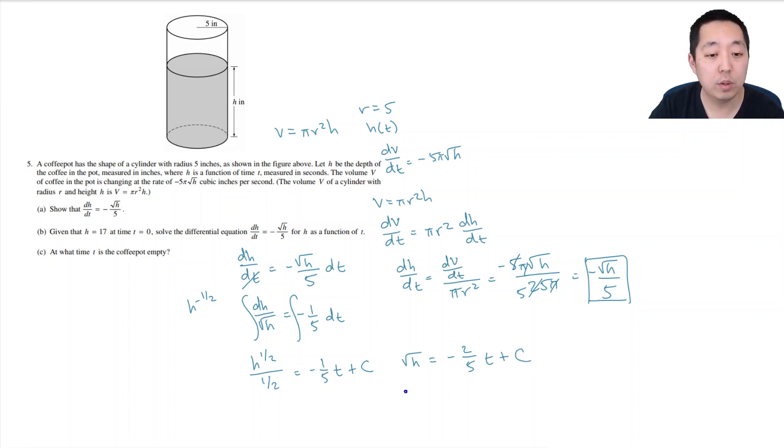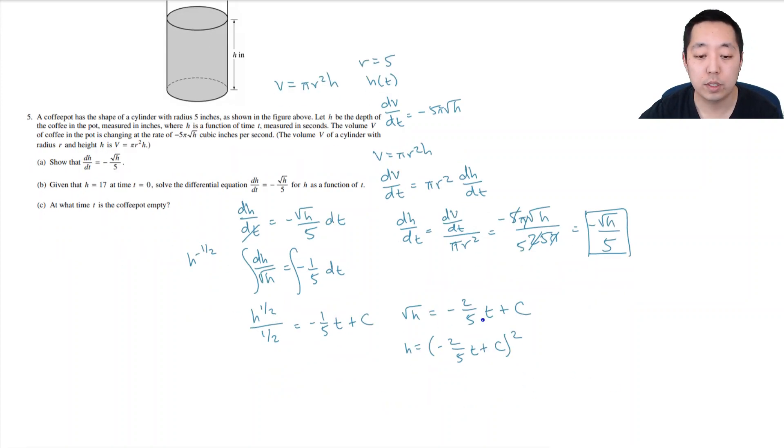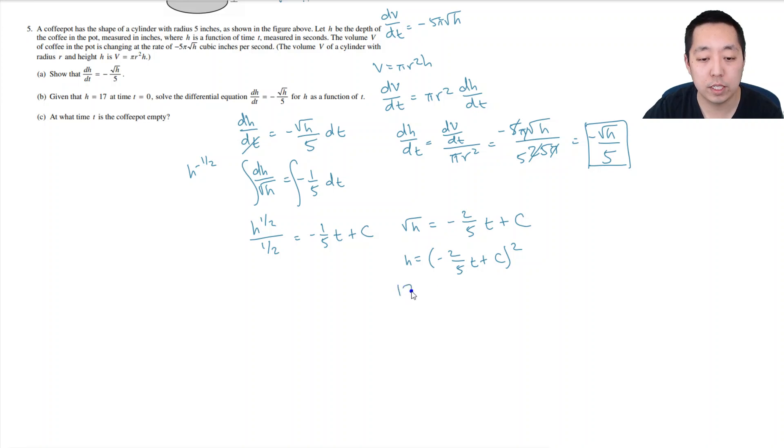And so h is equal to this squared: (-2/5 t + c)². Now, they know that h is 17 at t equals 0. So that means I can do 17, plug in 0, equals c², so c is equal to the √17. So that means h is equal to (-2/5 t + √17)².